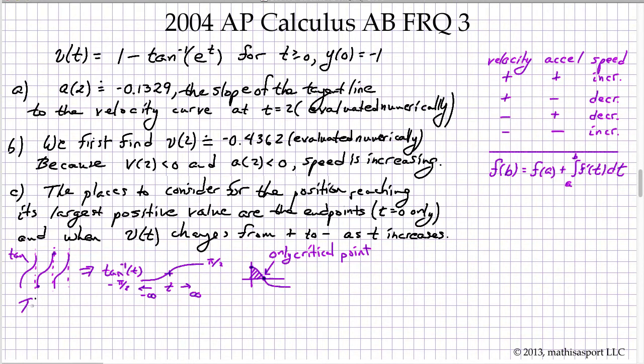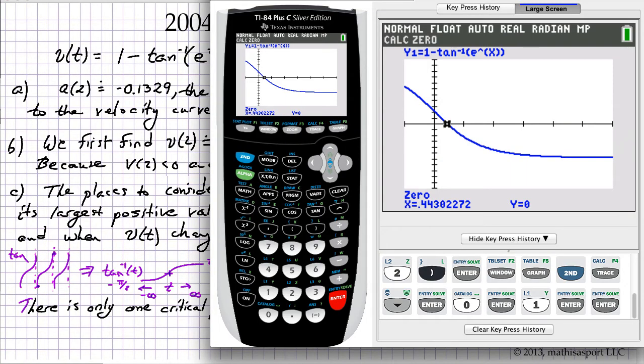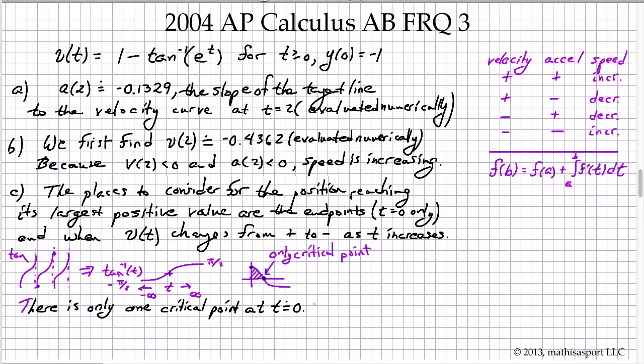There is only one critical point at t approximately equal to 0.4430 where velocity changes from plus to minus.